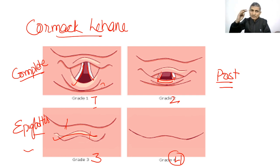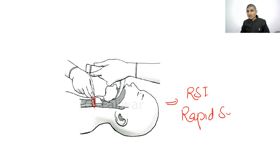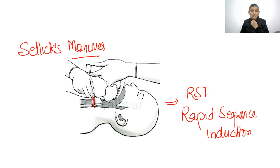This image shows cricoid pressure applied during intubation to prevent aspiration in rapid sequence induction (RSI). Pressure is applied over the cricoid cartilage to compress the esophagus between the cricoid cartilage and the vertebral body, preventing regurgitation. This is also known as Sellick's maneuver.